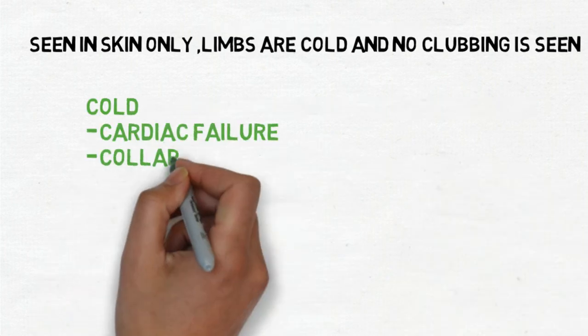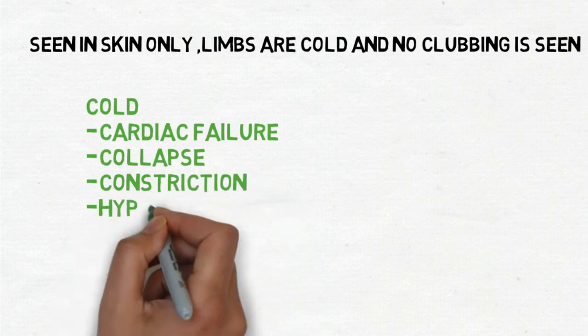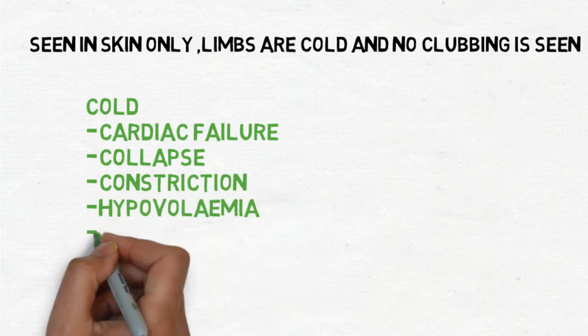What are the causes? The causes are cold exposure, cardiac failure, collapse, constriction, hypovolemia, and arterial and venous obstruction. Basically, all the causes of central cyanosis are also included in this sometimes.